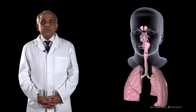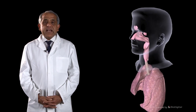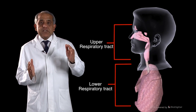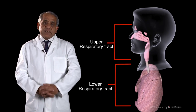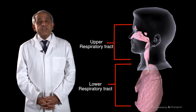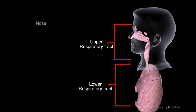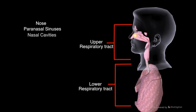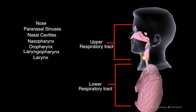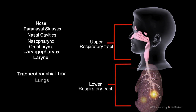It is conventional to describe the respiratory tract in terms of an upper respiratory tract and a lower respiratory tract. The upper respiratory tract includes the nose, paranasal sinuses, nasal cavities, nasopharynx, oropharynx, laryngopharynx, and the larynx. Beyond the larynx is the lower respiratory tract, made up of the tracheobronchial tree and the lungs.